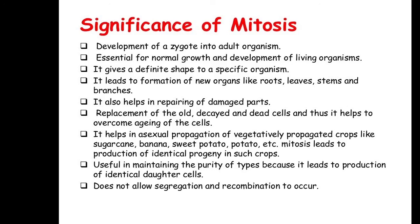The significance of mitosis includes: development of a zygote into an adult organism — the zygote is formed from ovum and sperm, and mitosis is what causes it to develop into an adult. It's essential for normal growth and development of the organism. The definite shape of an organism is because of mitosis. New organs, roots, leaves, stems, and branches in plants also require mitosis.